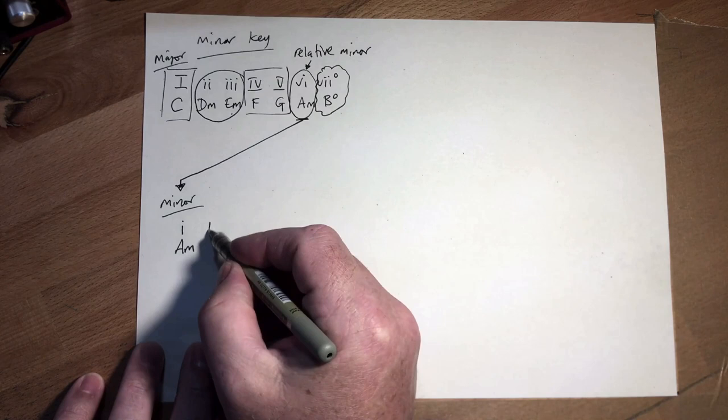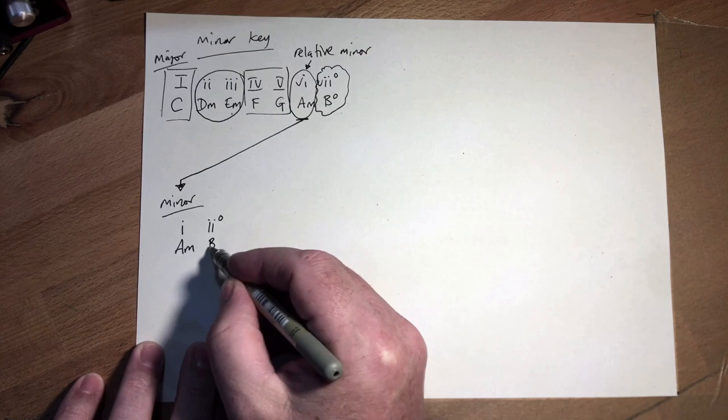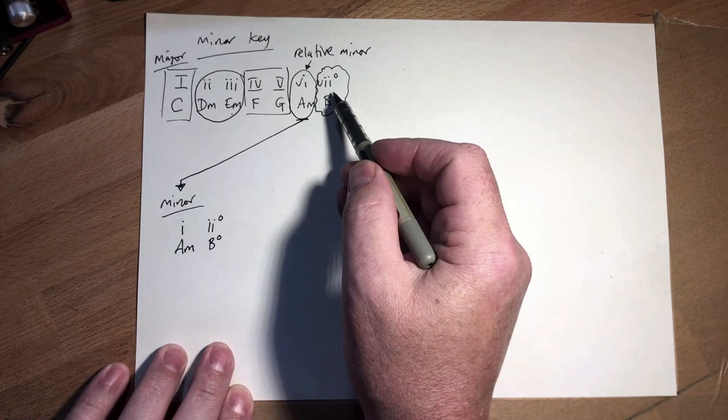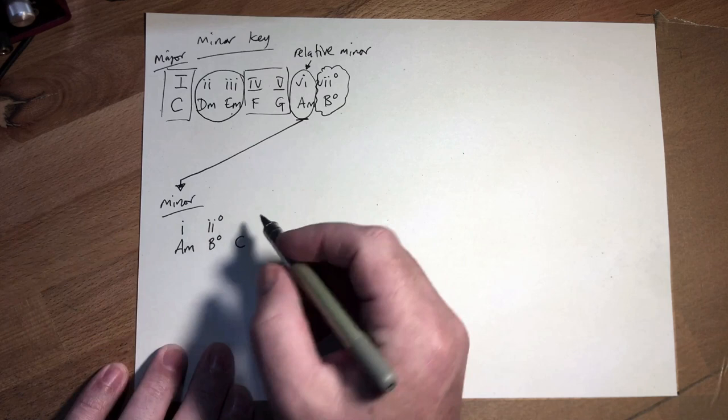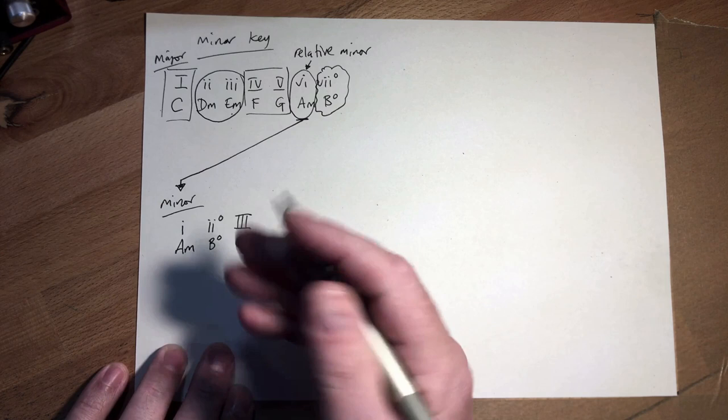Let's transfer these chords over. Chord 7 becomes chord 2 — we can see it's diminished so we keep that. Now we've got to chord 7, so we have to go all the way back to chord 1 — this is going to be the C chord. I write chord 3 with uppercase Roman numerals because this denotes that it is a major triad.